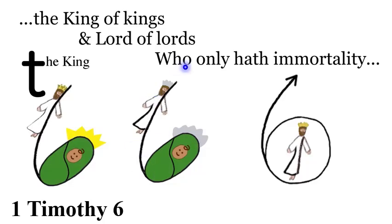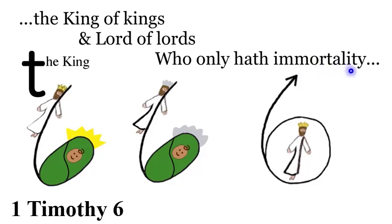Who only hath immortality. You can think of the person in the middle of the last six as God for 'who,' and also the bottom of the six as making an O shape for 'only,' and the arrow going up for the only one with immortality. 1 Corinthians 15 said that God is going to give immortality to those who are in him when he comes back to wake up the dead and take all the righteous with him to heaven.